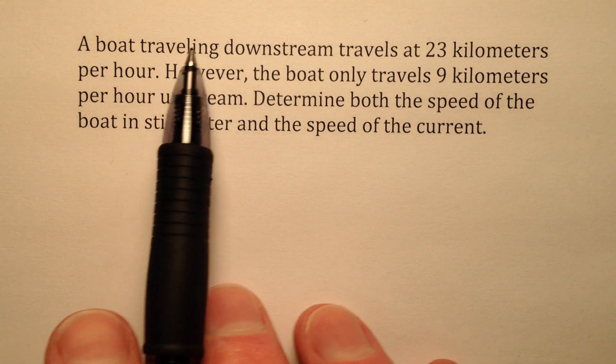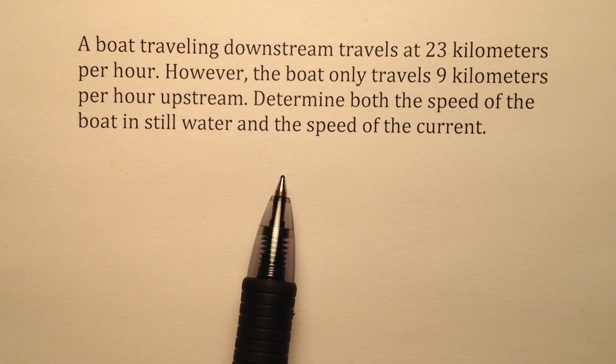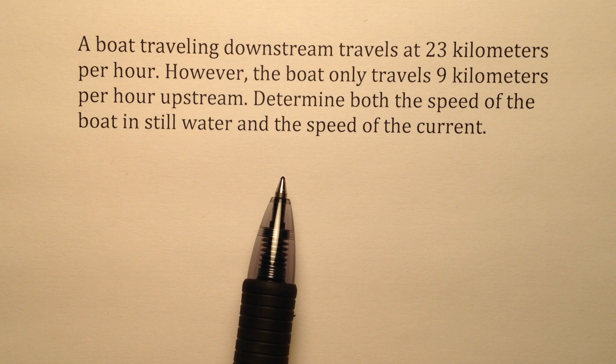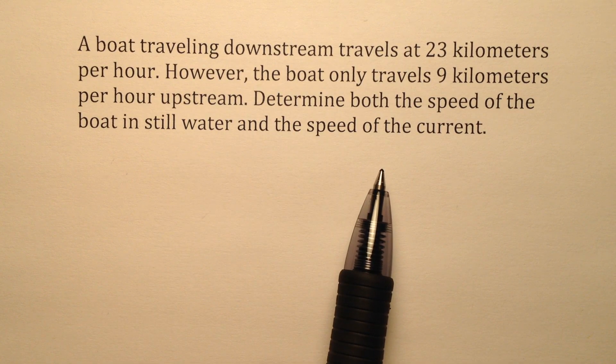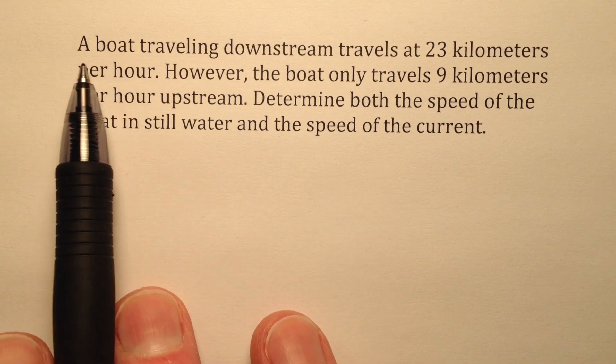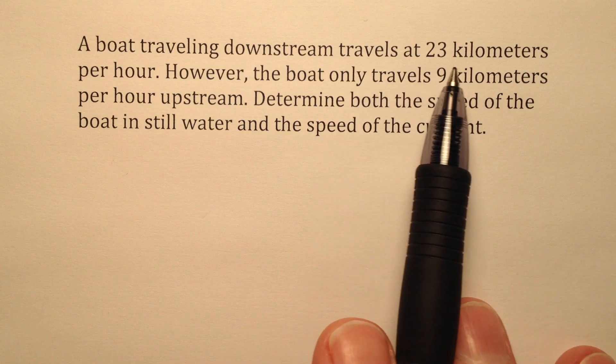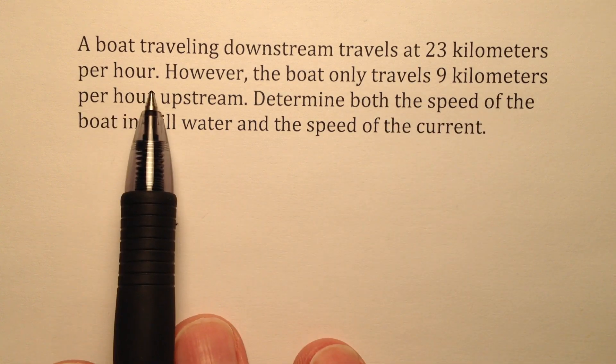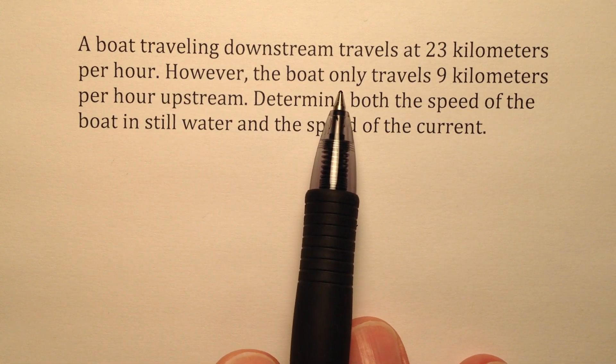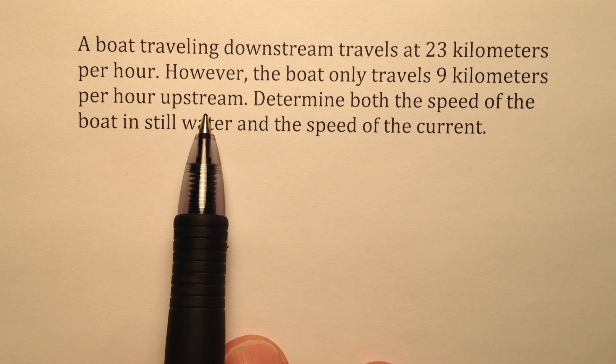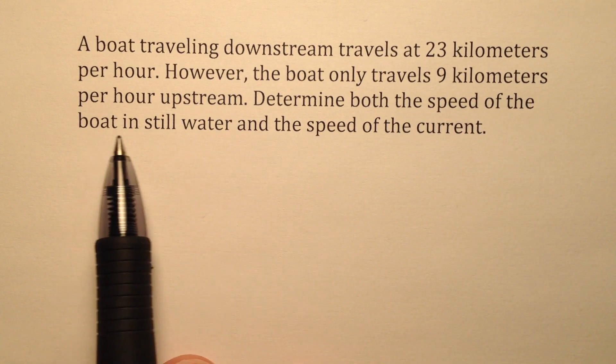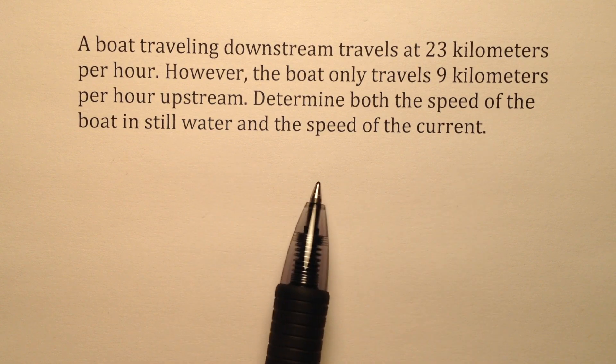In this example, we're going to take the given situation, write a couple of variables, write some equations for a system, solve that system, and then make sense of the answers we got. A boat traveling downstream travels at 23 kilometers per hour. However, the boat only travels 9 kilometers per hour upstream. Determine both the speed of the boat in still water and the speed of the current.